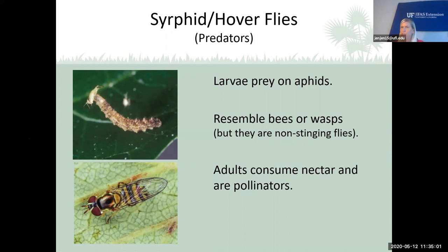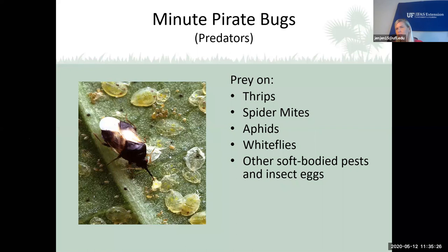Hoverflies or syrphid flies are another beneficial insect. They look like bees or wasps, but it's the larva that eats the bad insects. The adults are like butterflies — they consume nectar and act as pollinators. It's the larva that loves to eat aphids. The minute pirate bug loves to feed on whitefly larvae — it takes its mouthpart, sticks it into the bug, and drinks out all the body fluid.